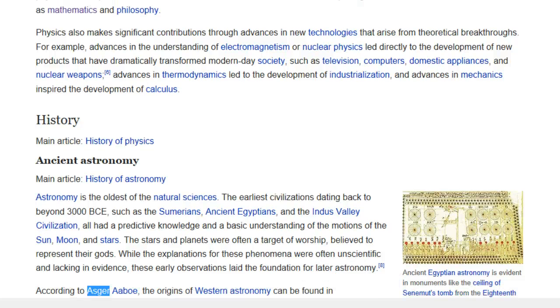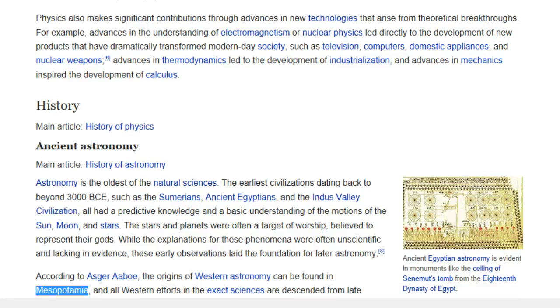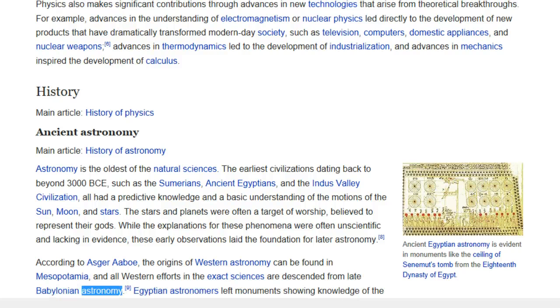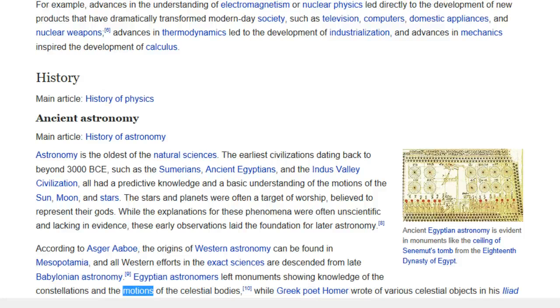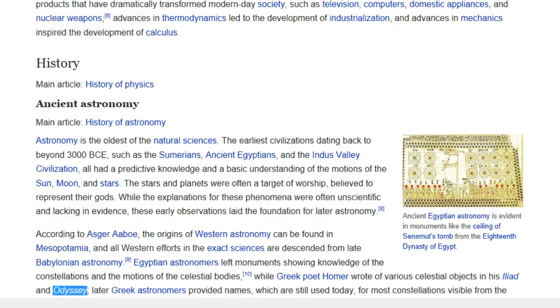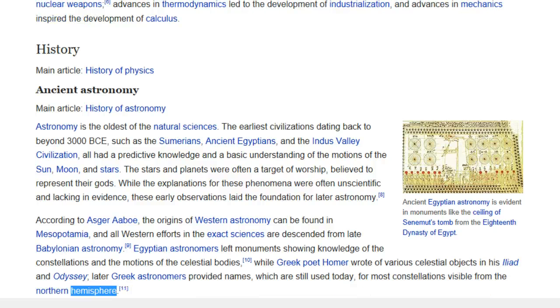While the explanations for these phenomena were often unscientific and lacking in evidence, these early observations laid the foundation for later astronomy. According to Asger Aaboe, the origins of Western astronomy can be found in Mesopotamia, and all Western efforts in the exact sciences are descended from late Babylonian astronomy. Egyptian astronomers left monuments showing knowledge of the constellations and the motions of the celestial bodies, while Greek poet Homer wrote of various celestial objects in his Iliad and Odyssey. Later Greek astronomers provided names, which are still used today, for most constellations visible from the Northern Hemisphere.